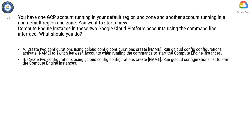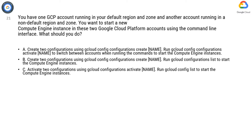Option B. Create two configurations using gcloud config configurations create name. Run gcloud configurations list to start the Compute Engine instances. Option C. Activate two configurations using gcloud configurations activate name. Run gcloud config list to start the Compute Engine instances.